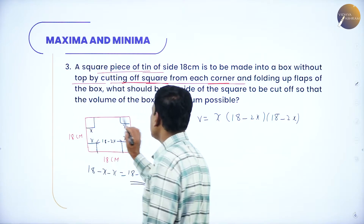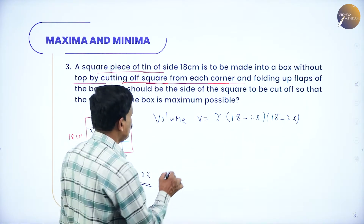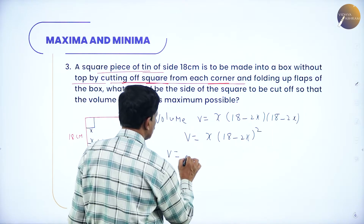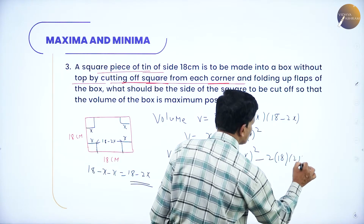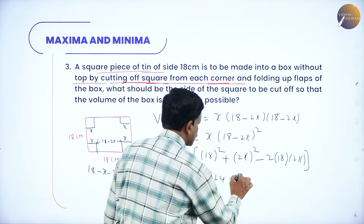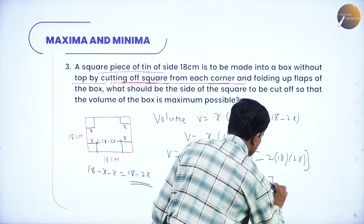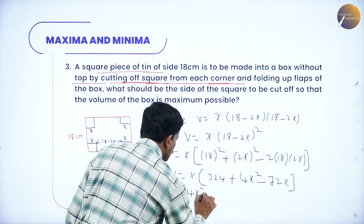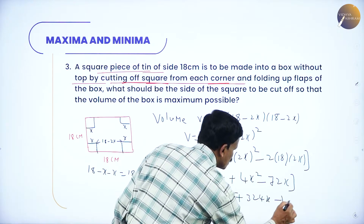Therefore v equals x times (18 minus 2x)². Expanding using (a minus b)²: v equals x times (324 plus 4x² minus 72x), which gives v equals 4x³ minus 72x² plus 324x. Let this be equation number 1.